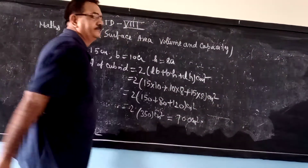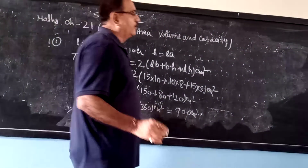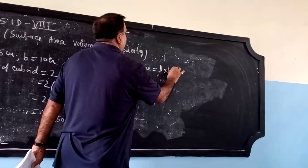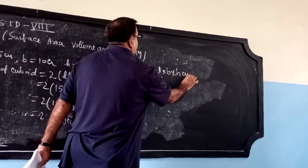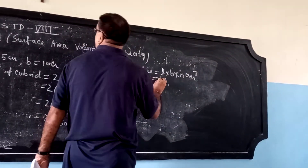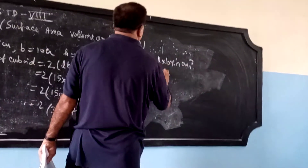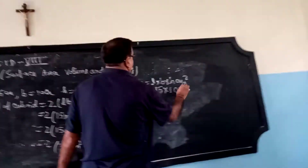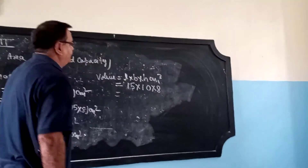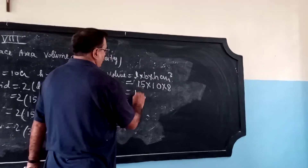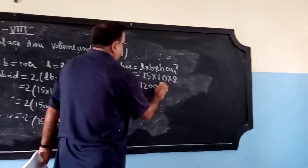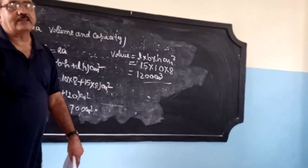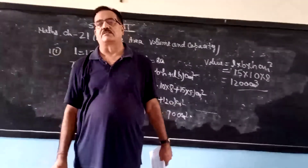Now when you have to find the volume: volume is equal to length into breadth into height in centimeters cubed. Length is 15, breadth is 10, height is 8 — that gives 1200 centimeters cubed. Like that, you have to solve some questions. Thank you.